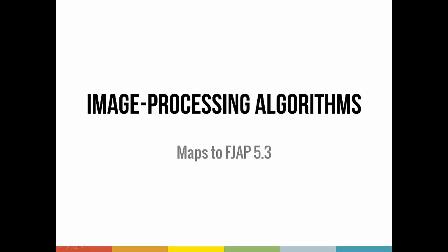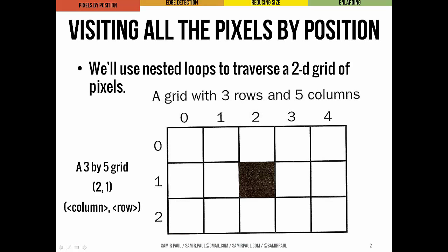Let's talk about some image processing algorithms that use the concepts introduced in the previous two lectures. The loops we've used so far have all had a linear structure, which means they visit each element in a sequence or count through a sequence of numbers using a single loop control variable.